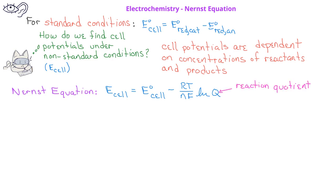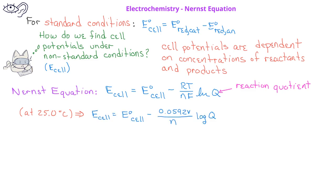However, since R and F are constants, as long as we're at 25 degrees Celsius, we can write a simpler version of the Nernst equation, which is the cell potential is equal to the standard cell potential minus 0.0592 divided by N multiplied by the log of the reaction quotient.